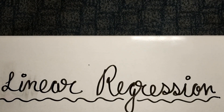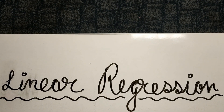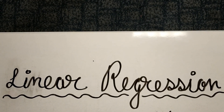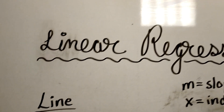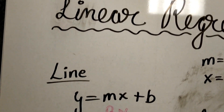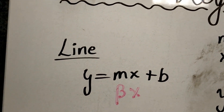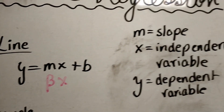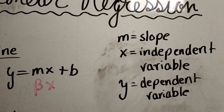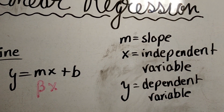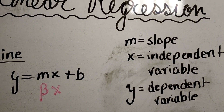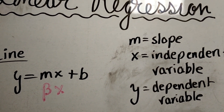At the core, linear regression is basically a line. A line has an equation of y equals mx plus b, where m is the slope, x is the independent variable, y is the dependent variable, and b is our beginning point or y-intercept.